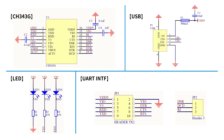The circuit schematic diagram of the CH343 USB to UART converter is simple and can be divided into four parts. The first part is the minimum system circuit of CH343G. The second part is the USB interface, which provides USB communication and power supply for the whole module. The third part is the status light. The fourth part is the serial port communication pin and the VIO voltage selection pin.